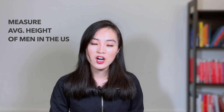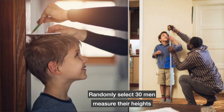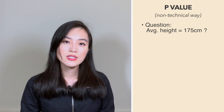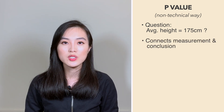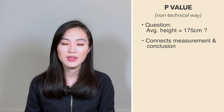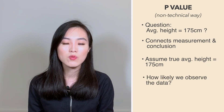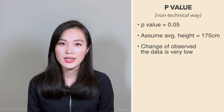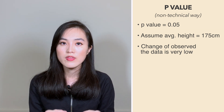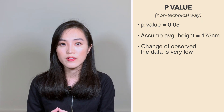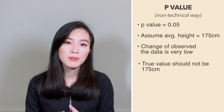Now let's explain p-value in layman's terms. We want to get the average height of men in the U.S. We randomly select 30 people and want to know if the average height equals a fixed value, say 175 centimeters. The p-value connects what data we observe with what conclusion we can draw. It tells us: assuming the true average height is 175 centimeters, how likely are we to observe this data? A p-value less than 0.05 means that assuming the true average is 175, the chance of observing our data is very low — so we conclude the true value is likely not 175 centimeters.